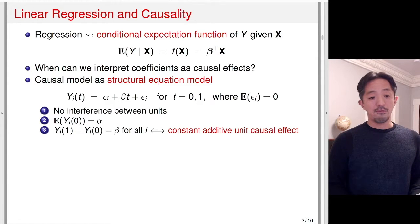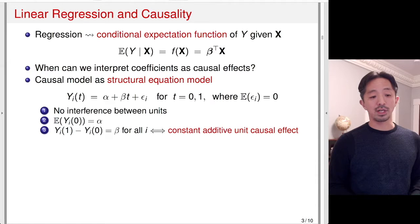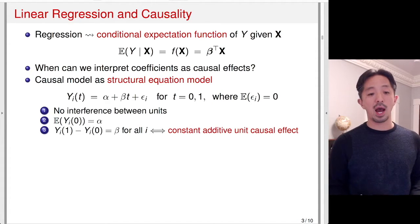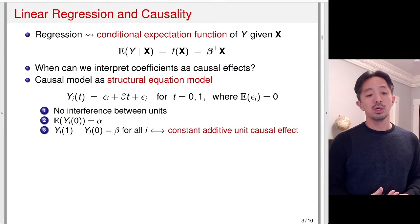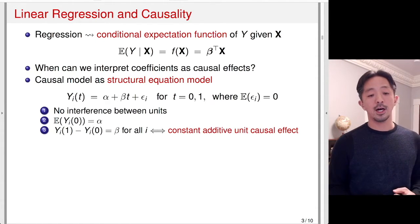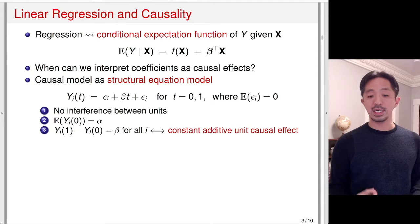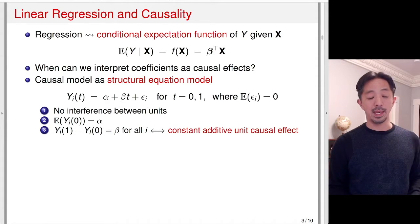If I plug in t equals 1 and t equals 0 into that equation and take the difference, that equals beta, regardless of which unit you do this calculation for, because epsilon i cancels out. So the difference is always beta, which suggests that this model, as written, assumes a constant additive unit causal effect — that is, each unit i has the same treatment effect, beta.